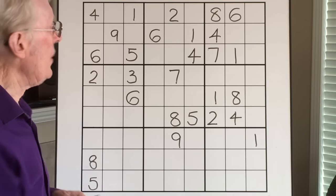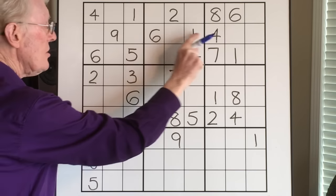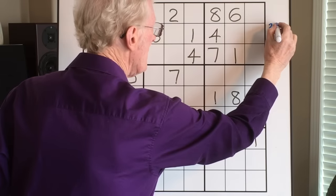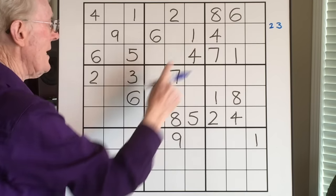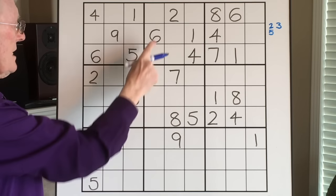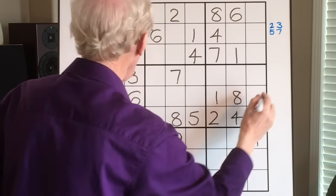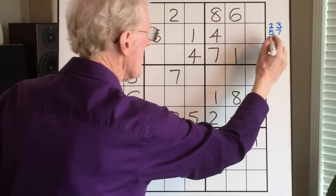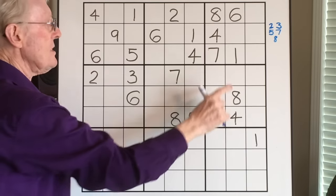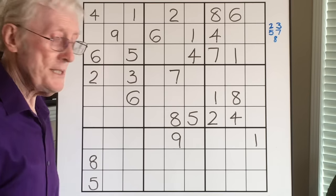Step one: we look along this row and work out what numbers are missing. Well, there's a one. There's not a two, so we put the two over here outside the puzzle. There's not a three along here, we put that over there. There's a four already. There's no five along this row, so we can put the five in. There's no seven either, we'll put the seven in. Is there an eight along here? No, there's not. Nine — yes, we have one. So we have five empty cells, and the numbers that can go in those five empty cells — it could be a two, or a three, or a five, or a seven, or an eight. That's step one.